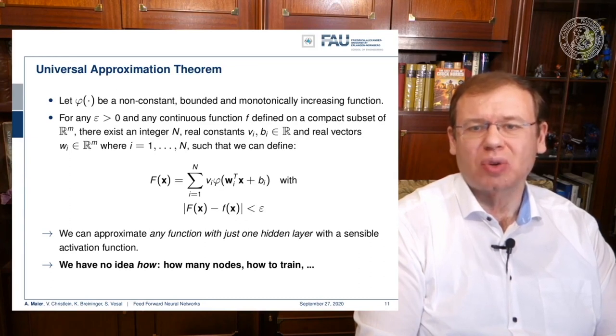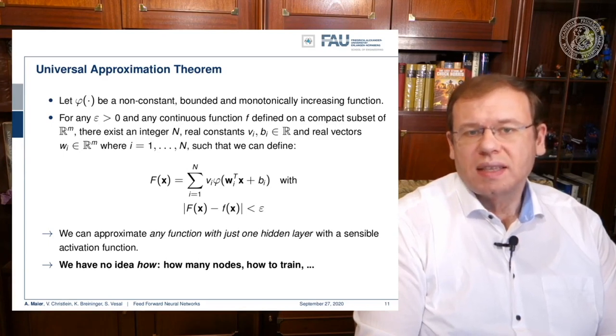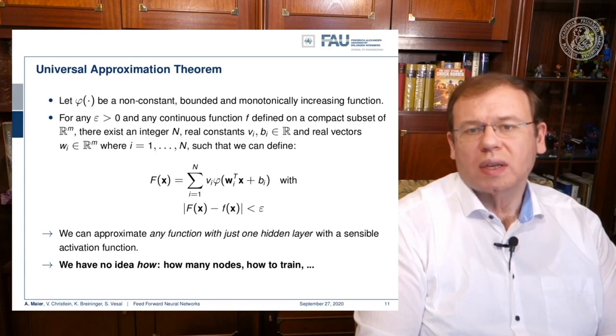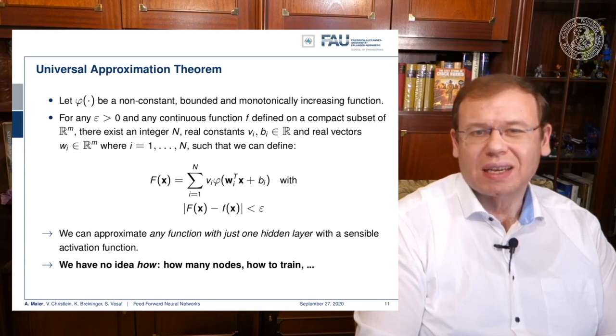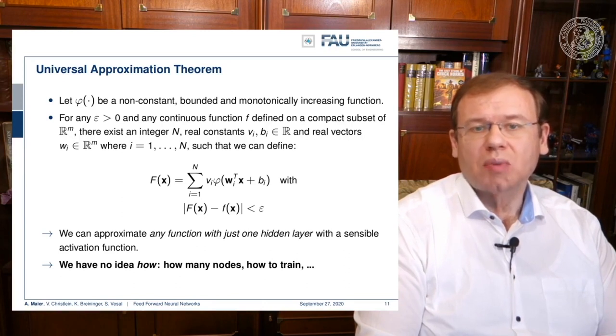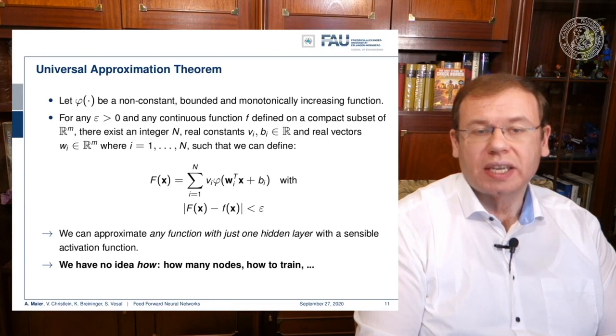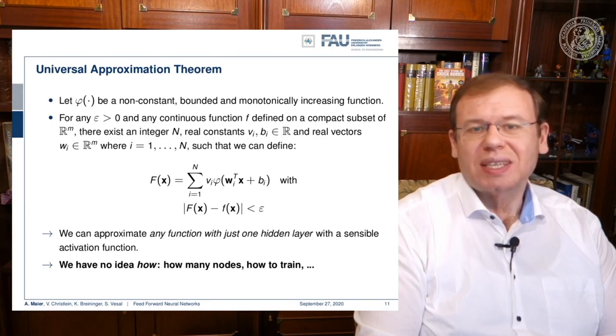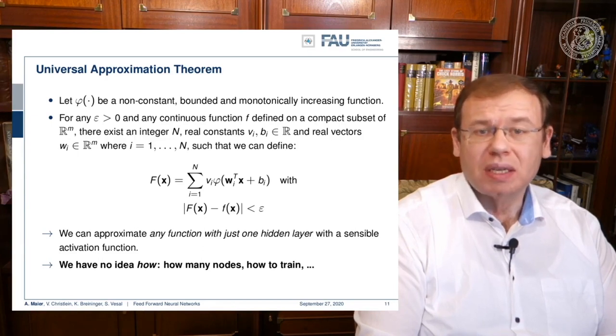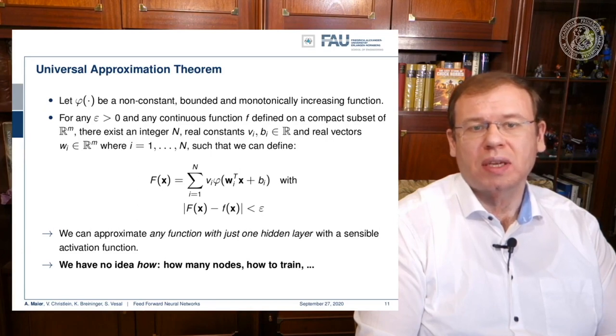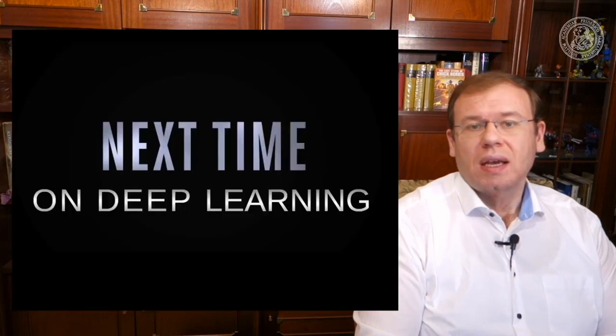It tells us that we can approximate everything with just a single hidden layer, but it doesn't tell us how to choose n or how to train. This is essentially the reason why we go to what is called deep learning. We can build systems that start disentangling representations over various steps. I expect anybody who is working in deep learning to know about universal approximation and why deep learning actually makes sense.